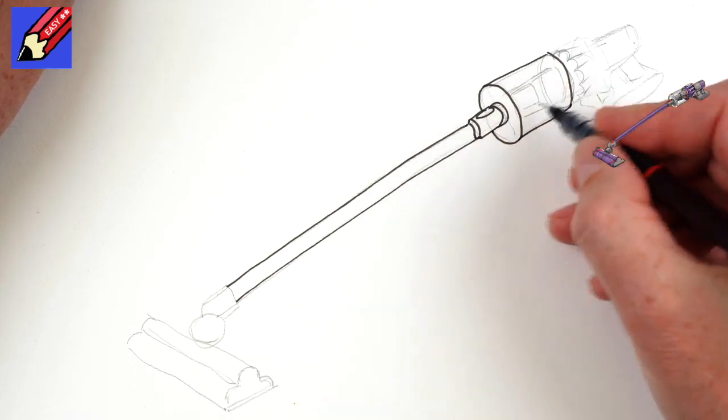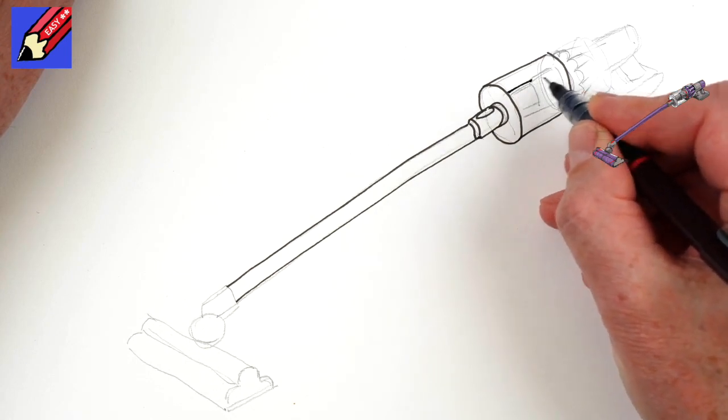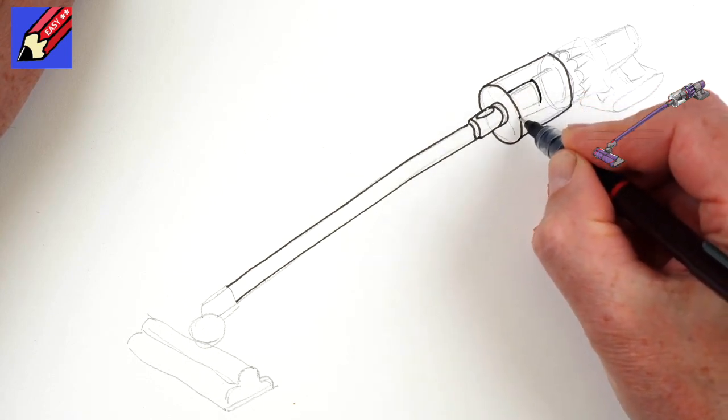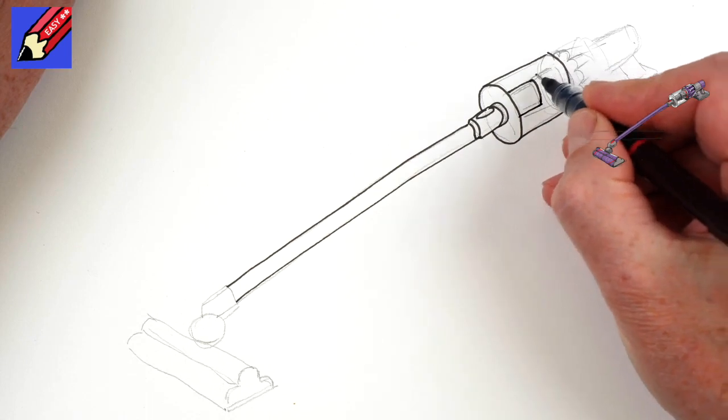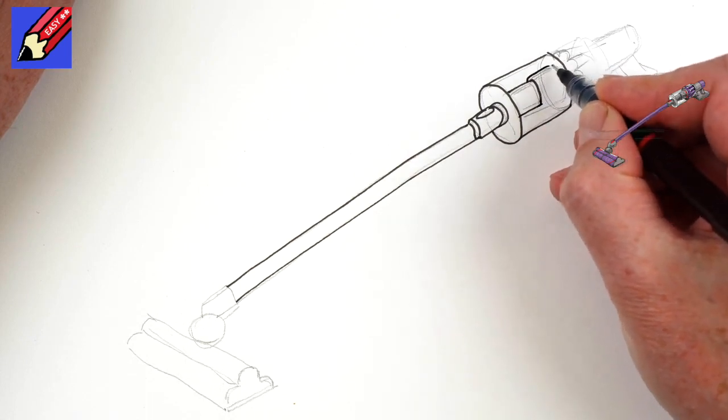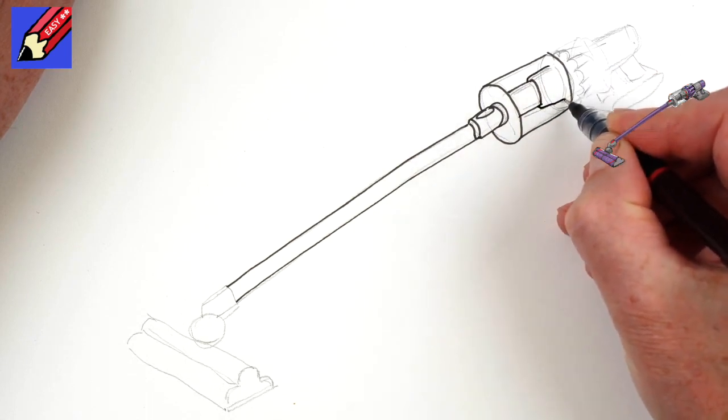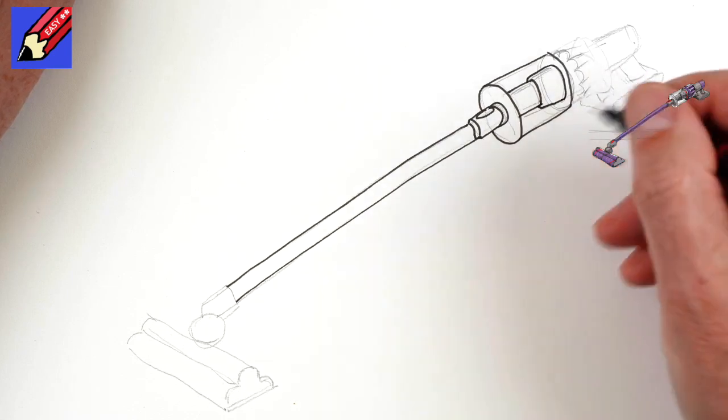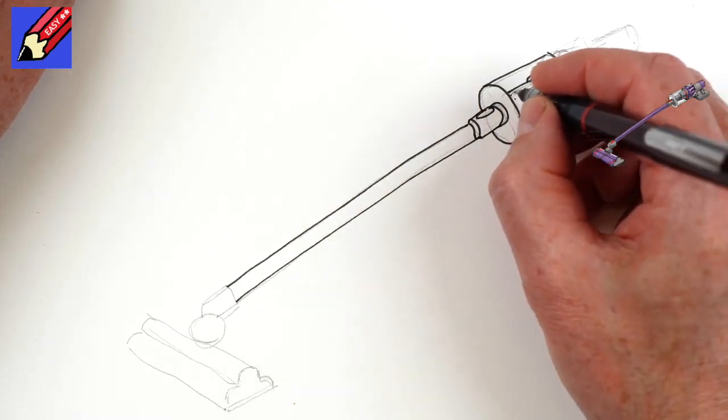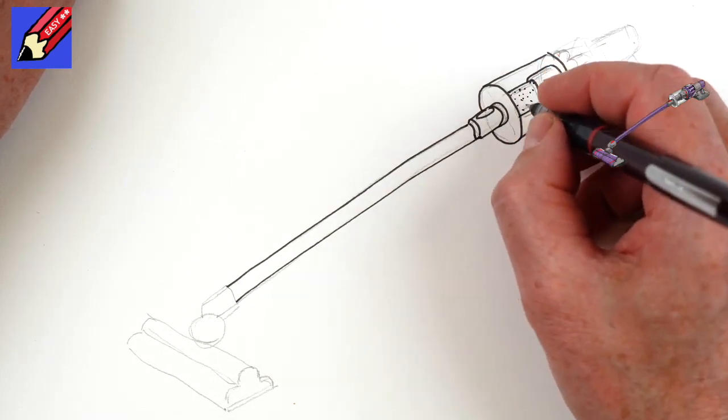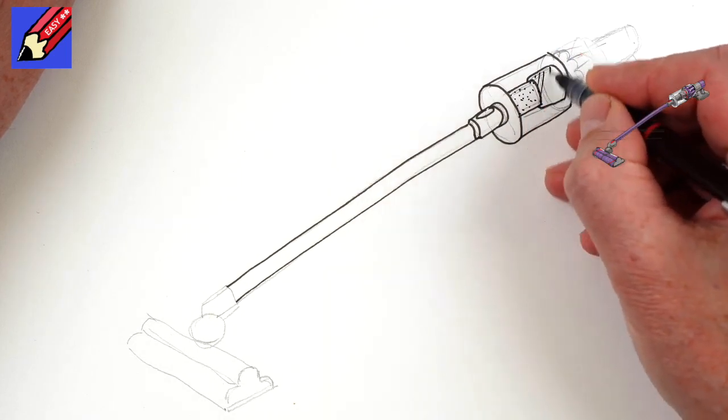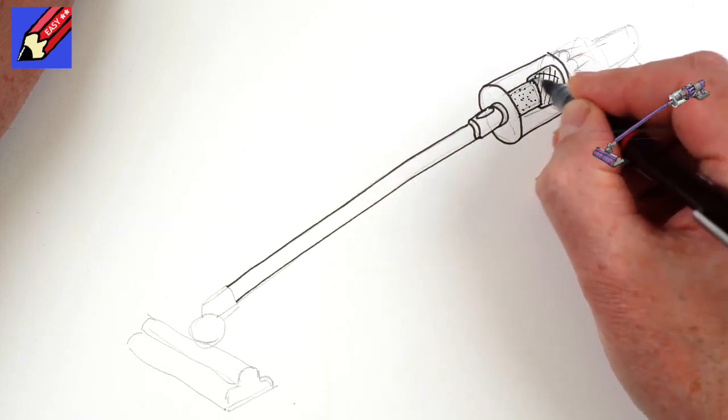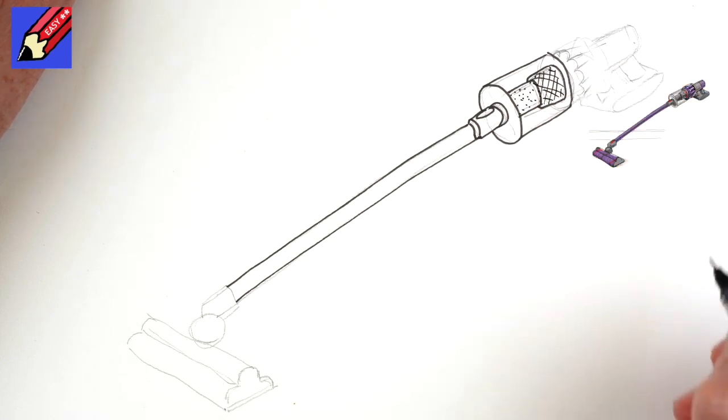And then we have this sort of section of the tube inside. And then another one that's just slightly bigger. So that comes around there and into there. And we'll just put lots of little dots in there. And we're going to put a kind of a pattern in there. Like that.